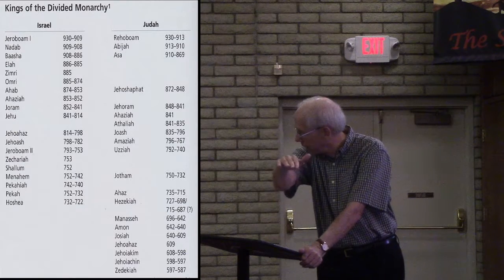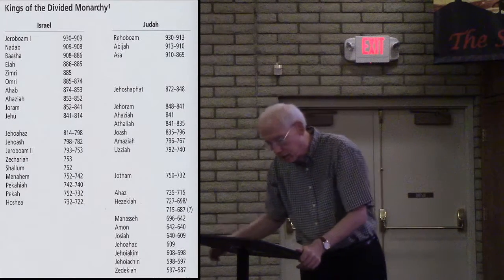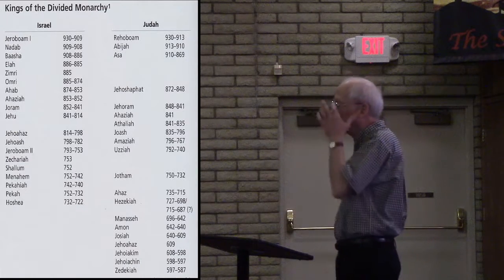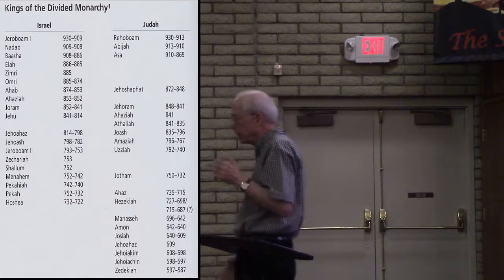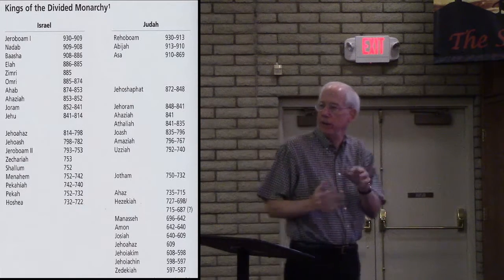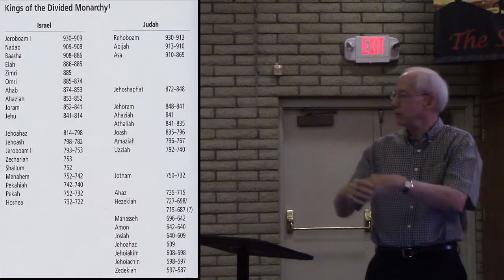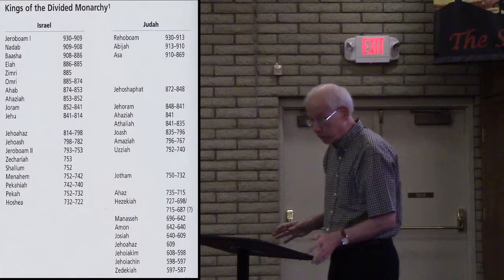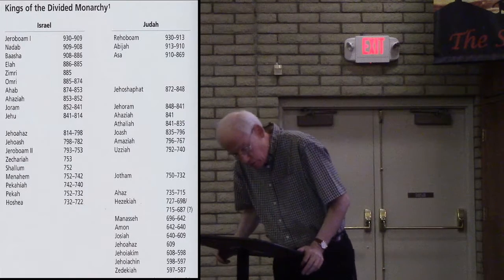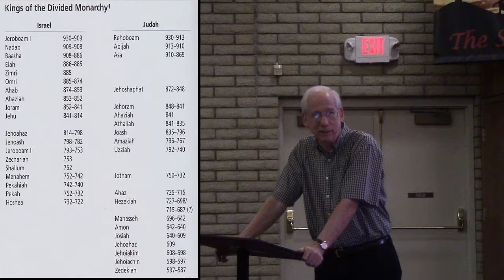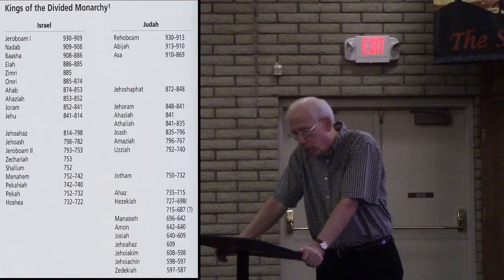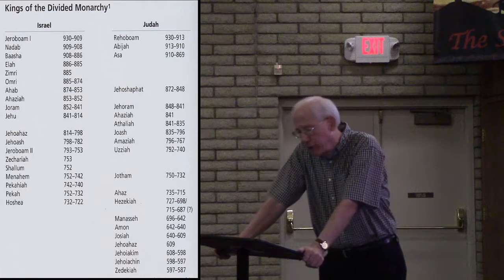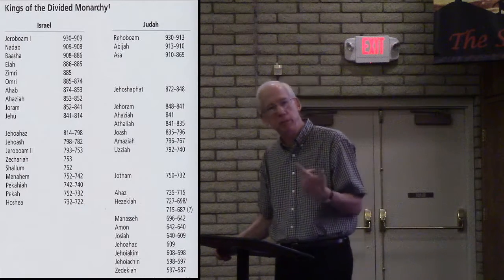Back in Israel, Jehu — who had been anointed king and reigned from 841 to 814 — attacked Baal worship in Israel. You may remember the scene where he gathered all the prophets and worshipers of Baal and then killed them. However, he continued in the sins of Jeroboam the son of Nebat — he continued with the golden calves and worshiping those idols.